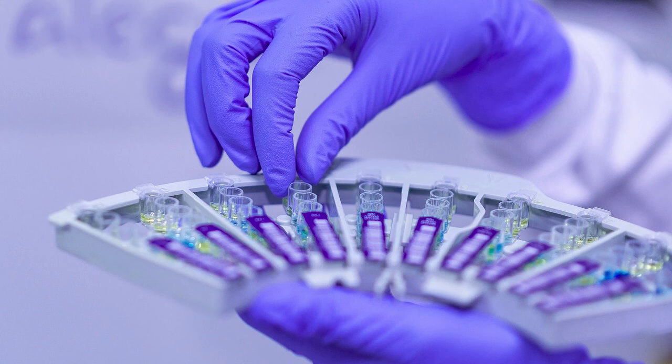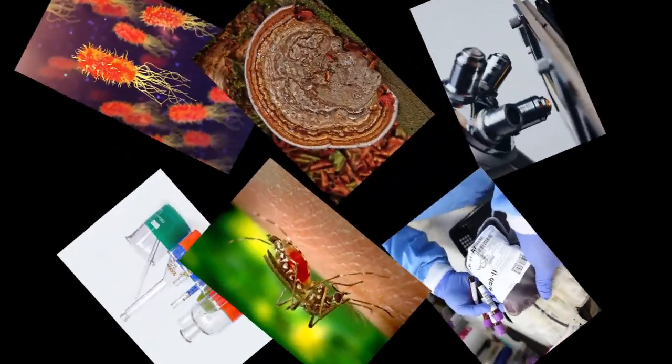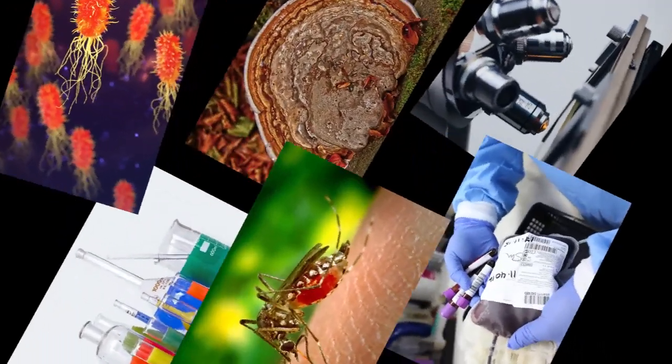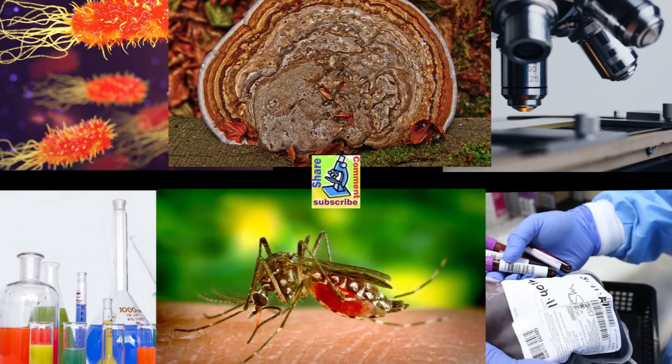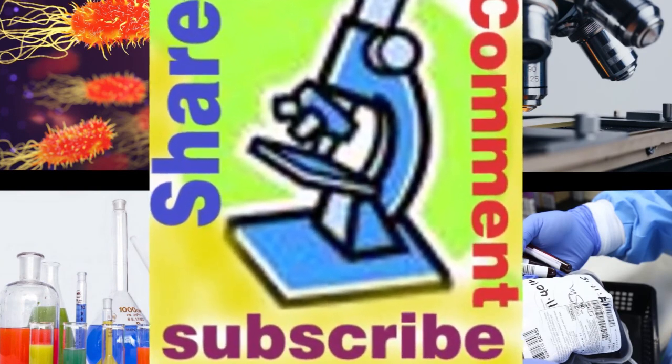Newer ELISA methods: multiplex ELISA can detect and quantitate many analytes from a very small sample. It uses flow cytometry that reads at different wavelengths, identifying different analytes in the same plate. The reverse ELISA method is also emerging in research and will soon be used in diagnosis, providing different reports from a single test.